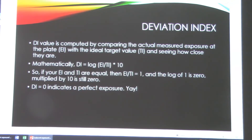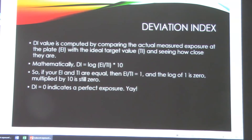So we take that log value and multiply it by 10 to get a whole number. If the exposure index was double the target index, the log of 2 is 0.3, and 0.3 times 10 is just plain 3 — so you get a deviation index of 3, meaning you used twice too much technique. If your EI and TI are the same — say a target index of 400 and an exposure index of about 399 — that's approximately 1, and the log of 1 is 0, so 0 times 10 is still 0. You get a deviation index of 0: perfect exposure.